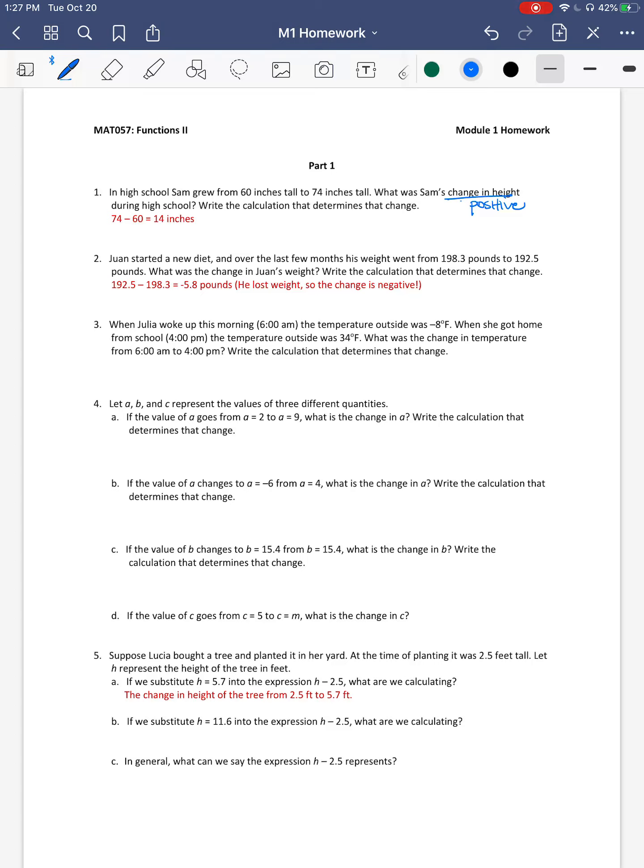Compare that to number 2 where it says Juan started a new diet, and over the last few months his weight went from 198.3 pounds to 192.5. So his weight went down. So when we find that change, we would expect to get a negative number. Because when we find a change, we want that sign to tell us something. If the number went up, we get positive. If the number went down, we get negative. And so that's why right here we did 192.5 minus 198.3. And so we get that negative number.